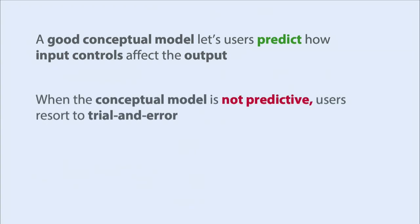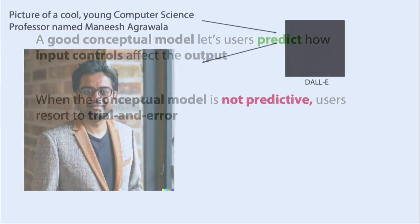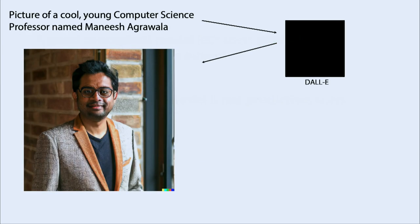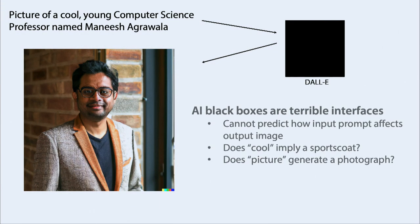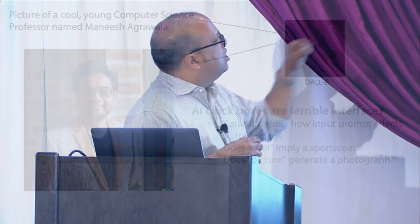A good conceptual model lets users predict how input controls map to outputs. When the model is not predictive, users have to resort to lots of trial and error — not a good experience. Going back to DALL-E: I don't have a conceptual model for how it works. I can't predict how the input prompt controls the output. What does 'cool' mean to the system?